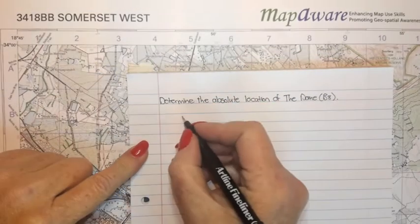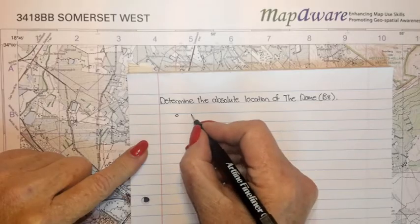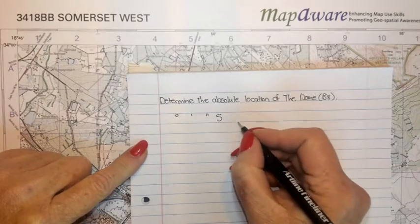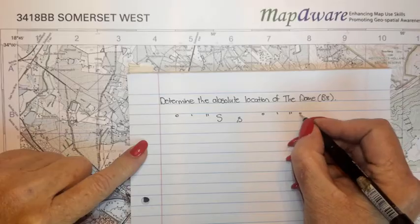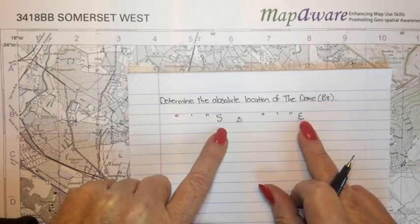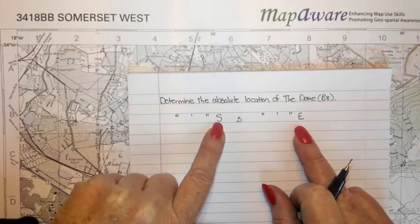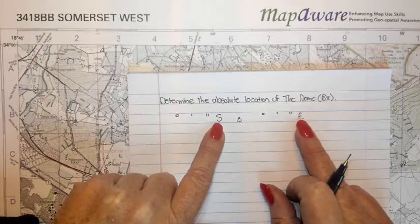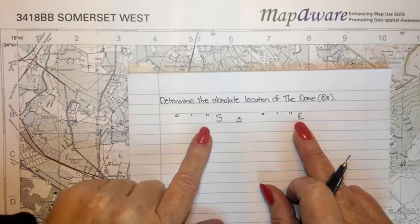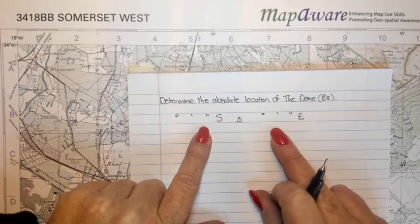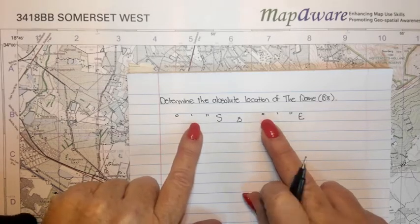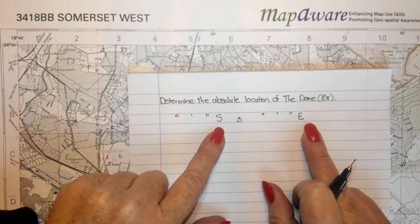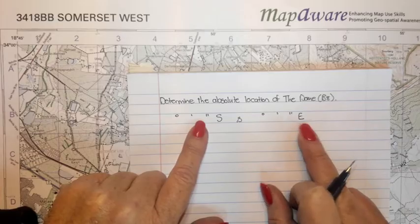The first four pieces are degrees, minutes, and seconds south, and the other four pieces of information are degrees, minutes, and seconds east. We immediately know it's south and east because South Africa is in the southern hemisphere and also in the eastern hemisphere. We always indicate latitude first, followed by longitude. Six pieces of information are read off from the map — degrees and minutes for both south and east — and we only need to calculate the seconds.